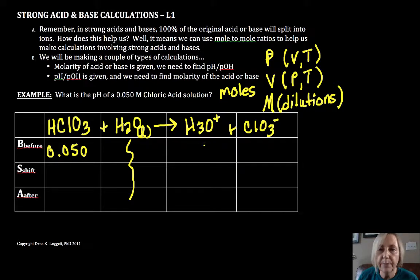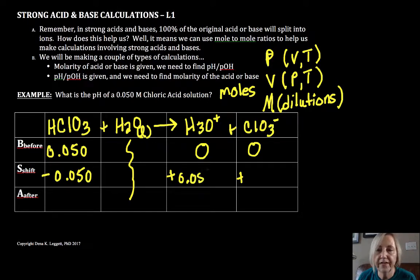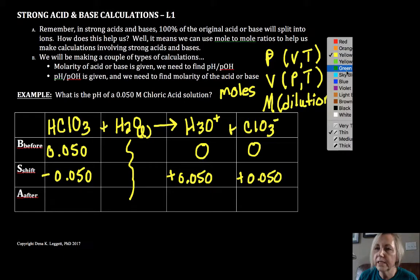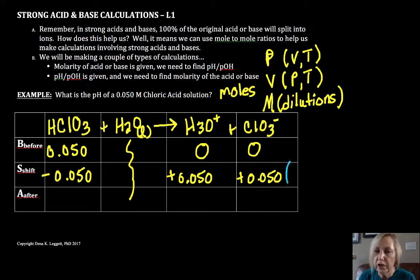Since we aren't adding volume to this, there's no dilutions, so we can use this table. At the beginning we have no other source of our hydronium or our chloride ion. We lose reactant and we gain product as a reaction proceeds, so there is no limiting, it's going to just depend upon our starting amount: 0.050, 0.050.